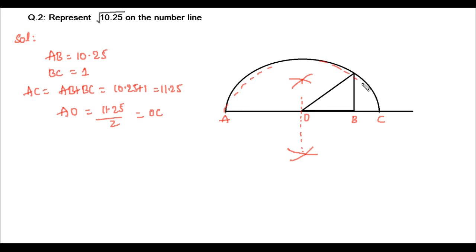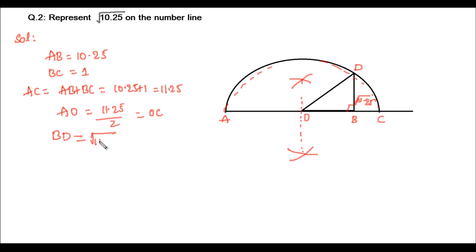For this semicircle, O is the center and AO and OC are the radii, both equal to 11.25 by 2. Now from point B, we draw a perpendicular such that it cuts the semicircle at a point, which we mark as D. This BD indicates square root of 10.25.